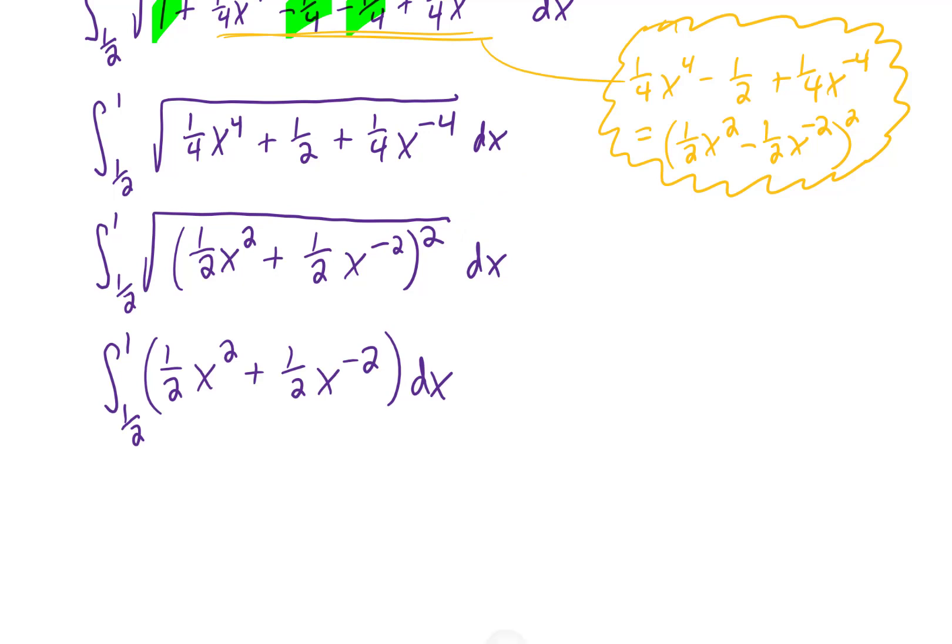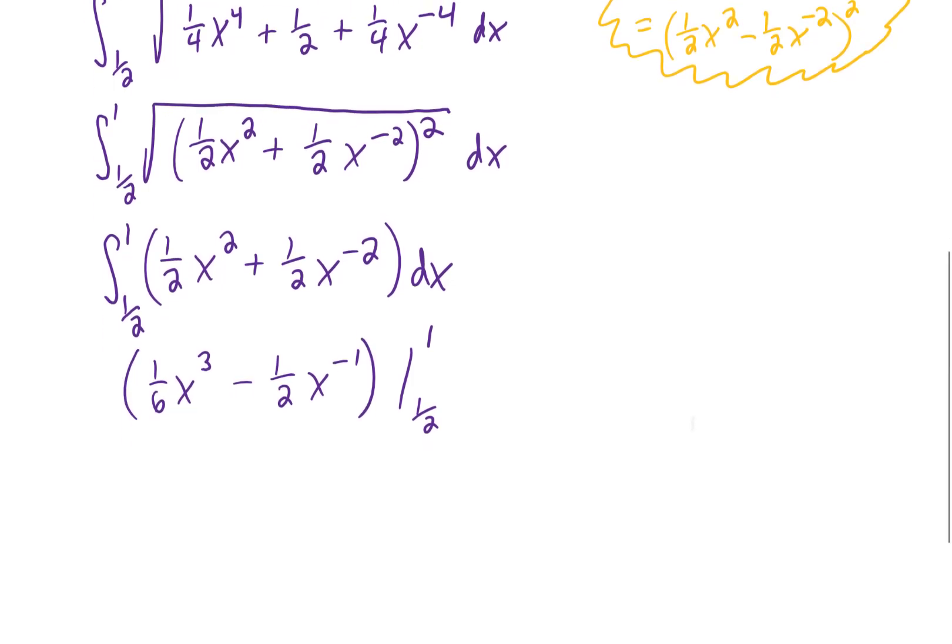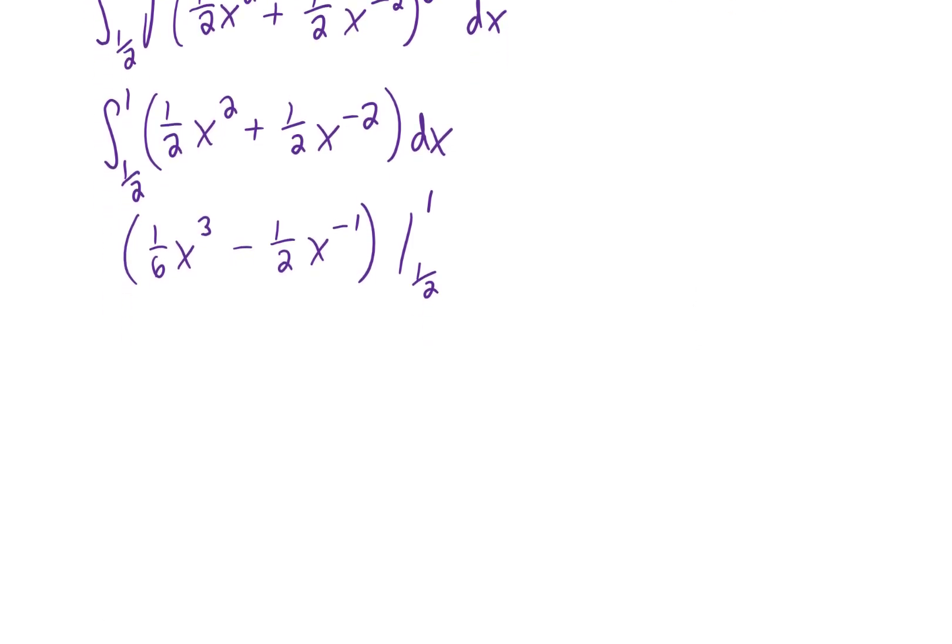We're just going to use the power rule twice and we're going to evaluate this between 1/2 and 1. Plugging in our upper and lower limits of integration gives us this line. Simplifying then, cubing 1 is just 1, 1 to the negative 1 power is just 1.